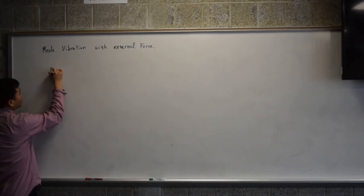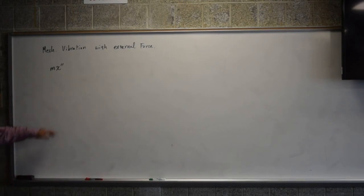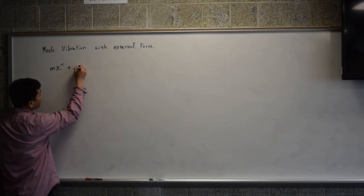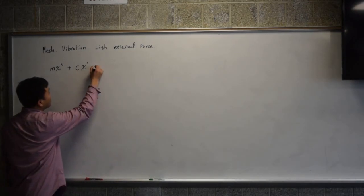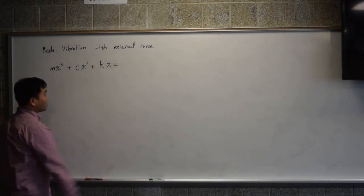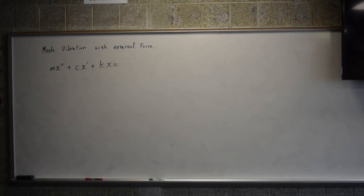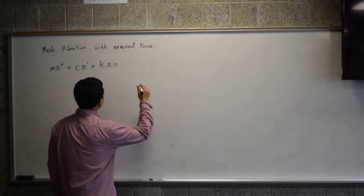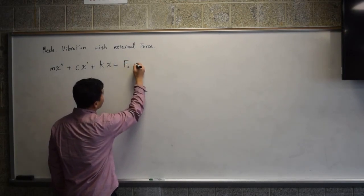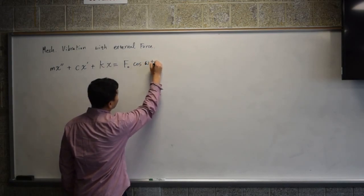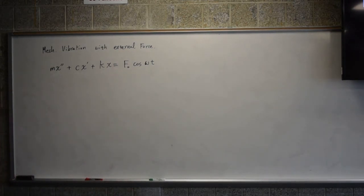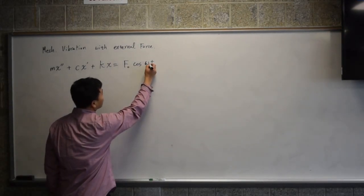We talked about how Newton's law f = ma — if you differentiate the position twice, you get the acceleration — so this is really f = ma plus c times x-prime (the velocity, which is the coefficient for friction) and then Hooke's law kx = 0, giving you the vibration from a spring-mass-dashpot system. Today I want to talk about what happens if you have an external force f₀ cos(ω₀t).